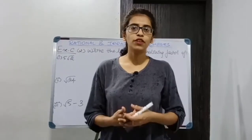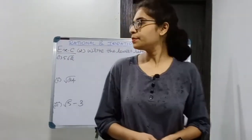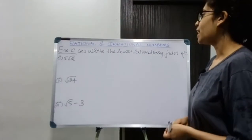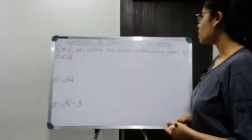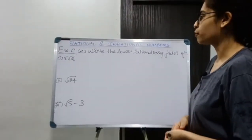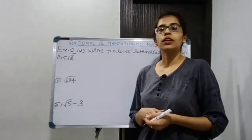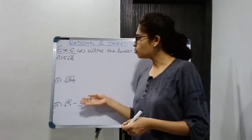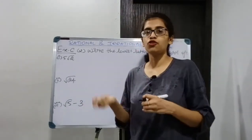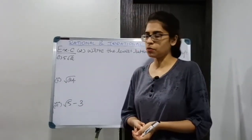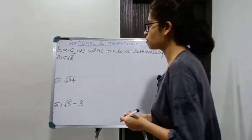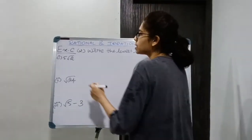Moving on to question number 2: write the lowest rationalizing factor. You are given some roots and you have to rationalize them. Let us find the rationalizing factors of these numbers.